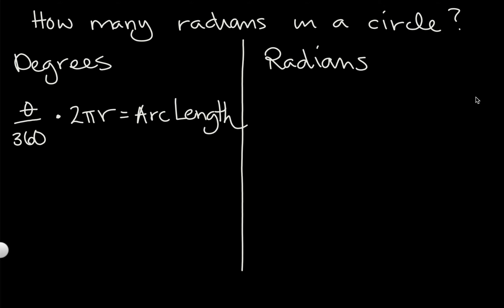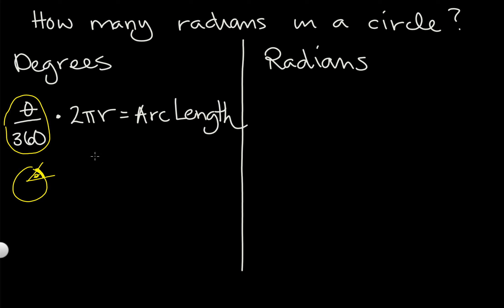So if we look at this a little bit closer, how many radians do we have in a circle? We can look at this using that definition. Remember that arc length you can figure out by — if you've got a circle and you've got some angle theta, this angle theta divided by 360 gives you the fraction of that circumference that we're talking about with our arc length. Remember, circumference is defined as 2πr, and you'll see how that's related to radians soon.